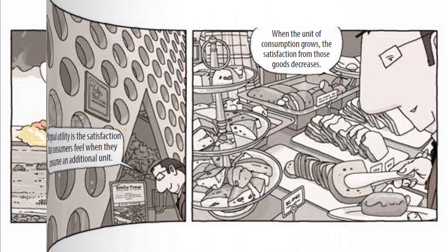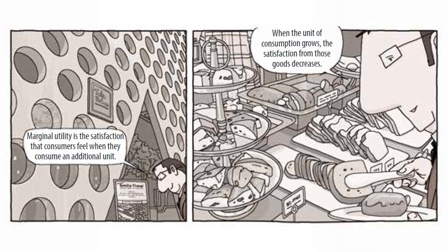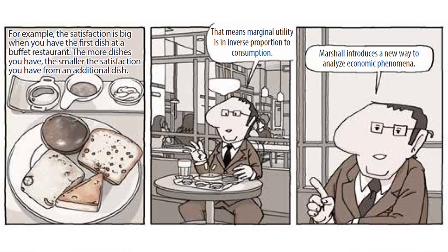Marginal utility is the satisfaction that consumers feel when they consume an additional unit. When the unit of consumption grows, the satisfaction from those goods decreases. For example, the satisfaction is big when you have the first dish at a buffet restaurant. The more dishes you have, the smaller the satisfaction from an additional dish. That means marginal utility is in inverse proportion to consumption.